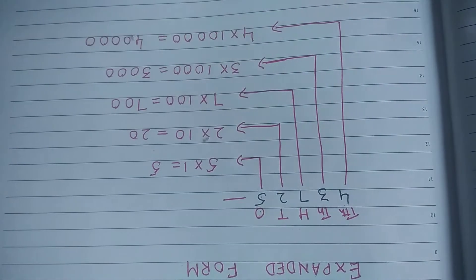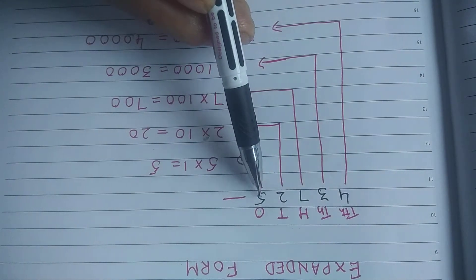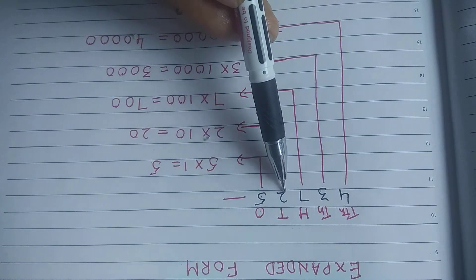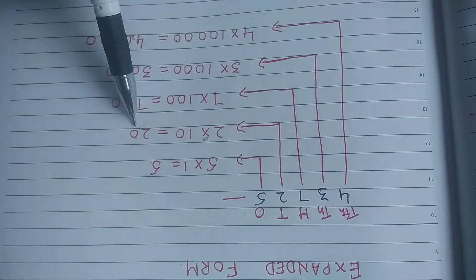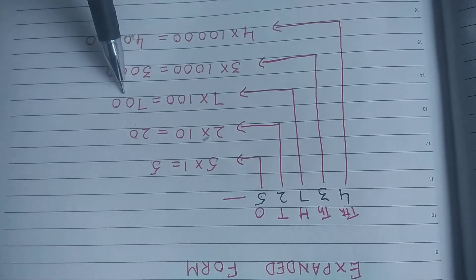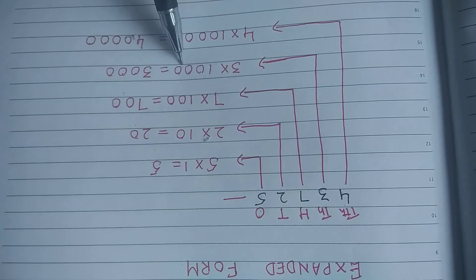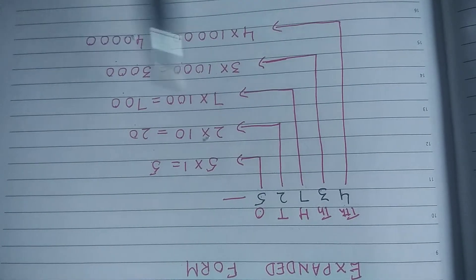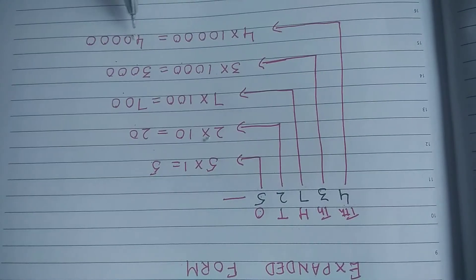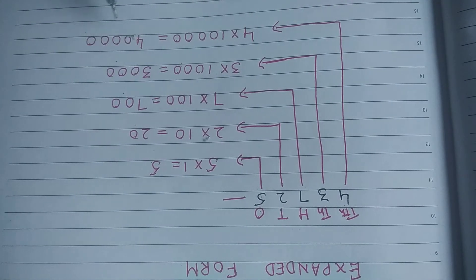Now let us find their place values. The place value of five will be five multiplied by its place — five ones are five. The place value of two is two times ten, which is twenty. The place value of seven is seven times hundred, so seven hundred. The place value of three is three times thousand, that is three thousand, and the place value of four is four times ten thousand, that is forty thousand.